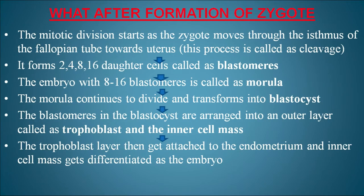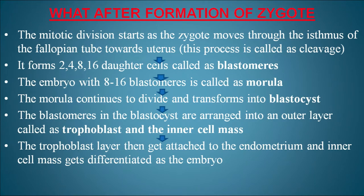After the formation of the zygote, mitotic division starts as the zygote moves through the isthmus of the fallopian tube towards the uterus. This division is called cleavage. It forms 2, 4, 8, and 16 daughter cells called blastomeres. The embryo with 8 to 16 blastomeres is called a morula.